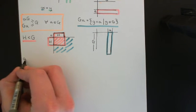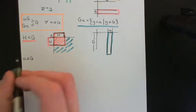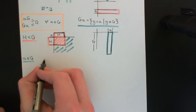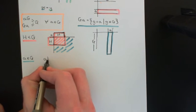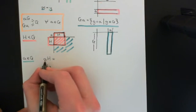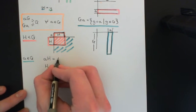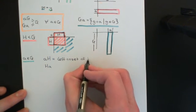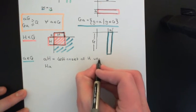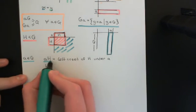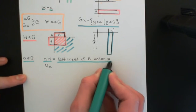We're going to take some element little a, which is an element of capital G — an arbitrary element of the group. Then I'm going to define two sets: the set AH and the set HA, in the same spirit as before. The set AH, where we have a on the left of capital H, is going to be called the left coset of the subgroup H under the element little a. You could choose different little a's, so it is important to specify which little a you are using.